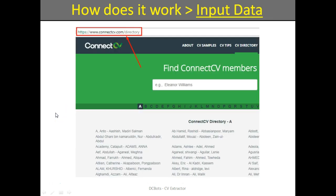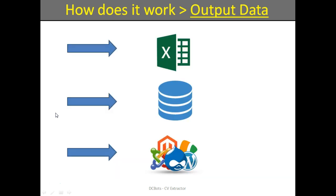How does it work? As input data you set the job website or resume directory listing link. Then just launch the data extraction process in DCBot software. Finally you receive contacts and other essential data on applicants.